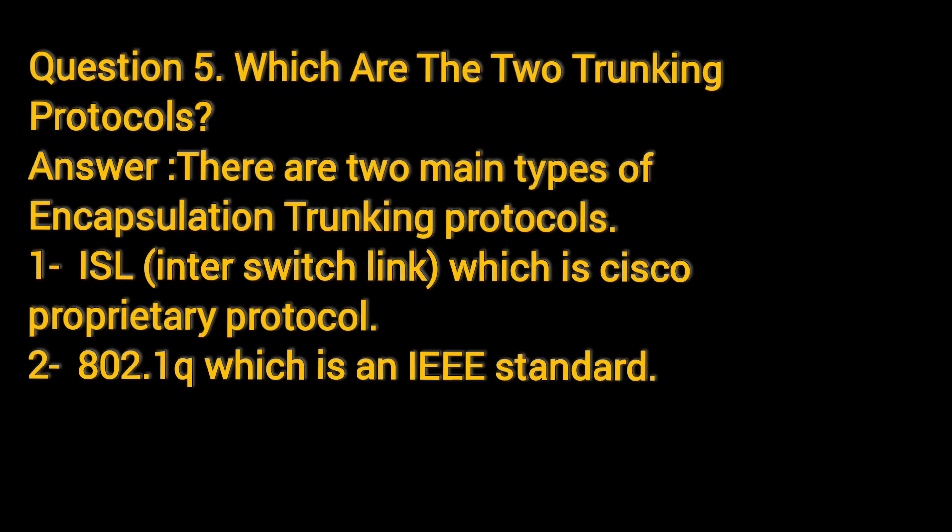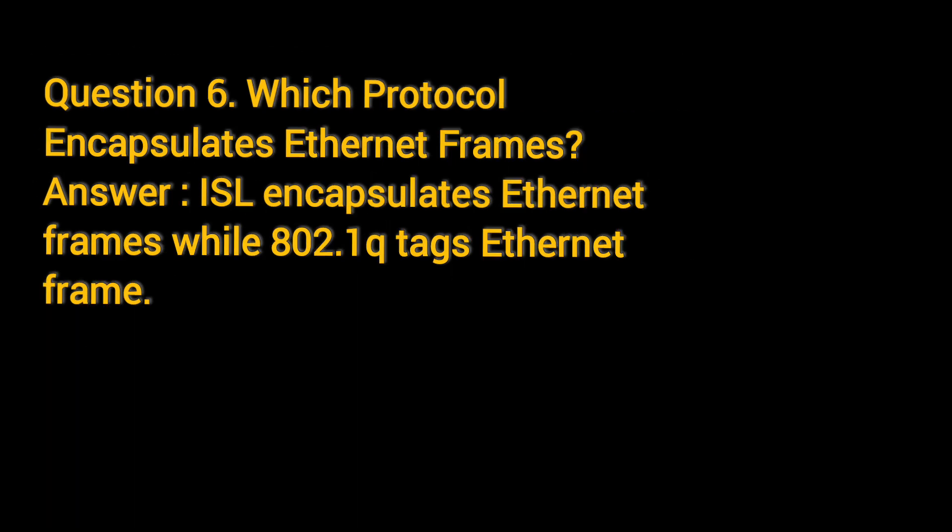Question 5: Which are the two trunking protocols? There are two main types of encapsulation trunking protocols. First, ISL (Inter-Switch Link), which is a Cisco proprietary protocol. Second, 802.1Q, which is an IEEE standard.